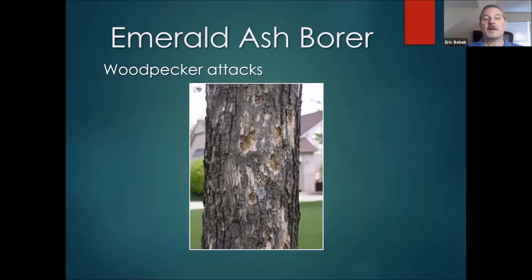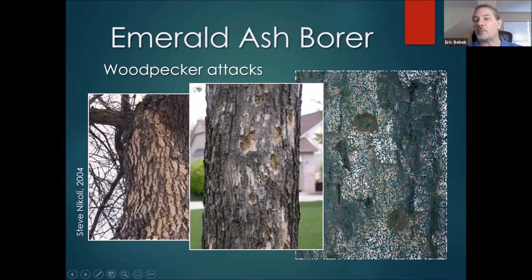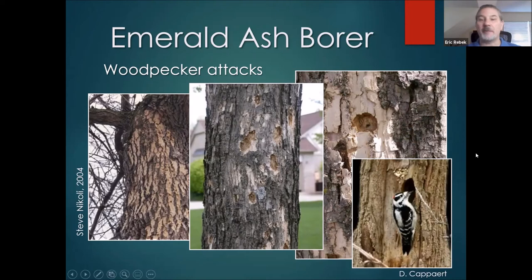Woodpeckers can be an early indication of a problem as well. When we get increased woodpecker attacks, it may start out with blonding where they're flecking away a lot of that outer bark, and then erupting into full attacks into that wood as they try to remove those emerald ash borer pupae and larvae from the tree. We see these large gaping holes where woodpeckers have been excavating to get that protein source. Lots of different woodpecker species, including downy, hairy, redheaded, and red-bellied woodpeckers, are working these trees. We'll talk a little bit more about woodpeckers later when we talk about biocontrol.